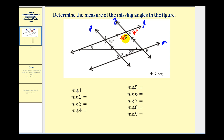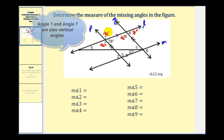Angle eight and angle seven are corresponding angles, so angle seven is also one hundred two degrees. And this angle of seventy-eight degrees and angle one form a linear pair, which are also supplementary, so angle one is one hundred two degrees.